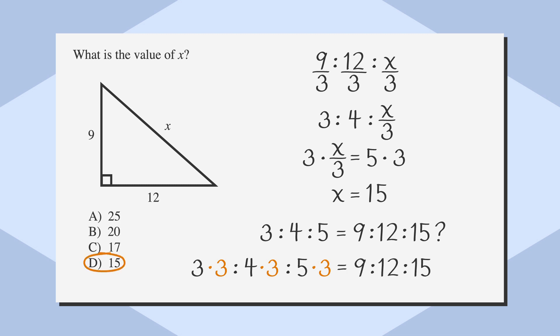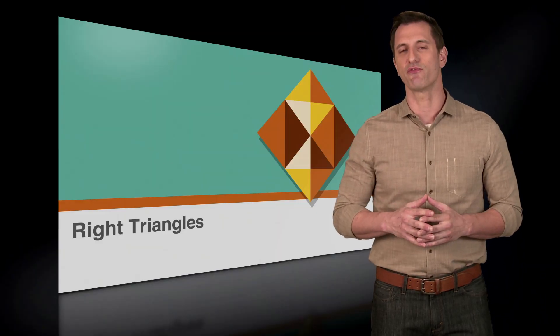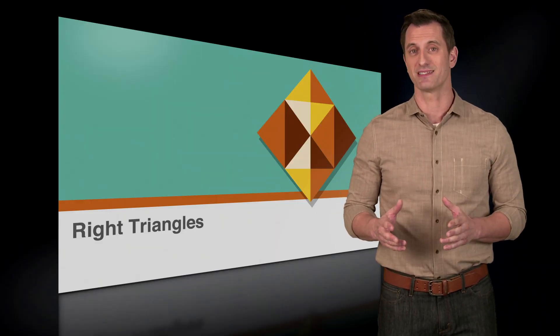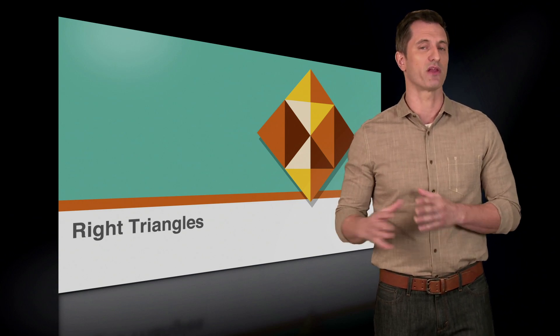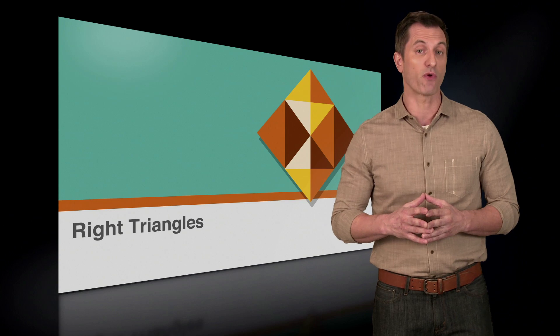Answer choice D is the correct choice. But be careful: just because you see the numbers 3, 4, or 5 on a right triangle doesn't mean that you can use this rule. The hypotenuse must always be a multiple of 5, while the legs are always multiples of 3 and 4.